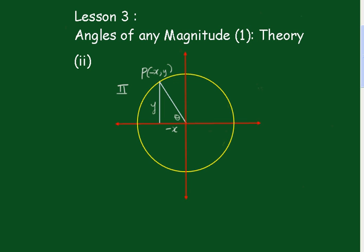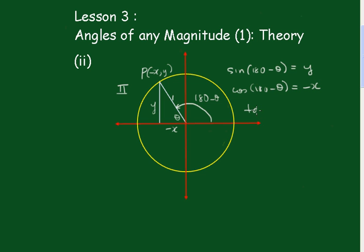Moving on to the second quadrant, we can see that this angle Theta is really moving in this direction, so that angle is 180 degrees minus Theta. The sine of this angle in the second quadrant is the sine of 180 degrees minus Theta, which equals just Y on 1, or Y. The cos of 180 minus Theta is equal to minus X on 1, that's minus X. So the only ratio that is positive is the sine ratio — sine is the only one positive in the second quadrant.